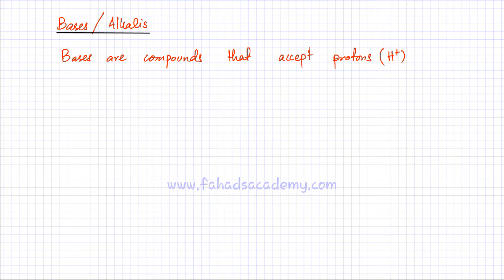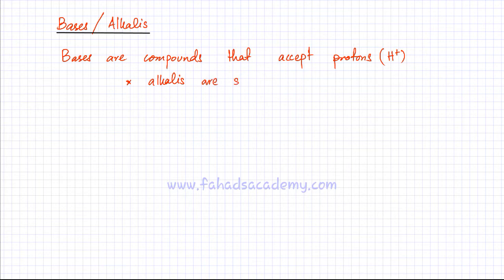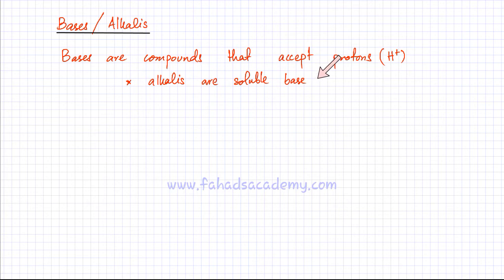Now, what are alkalis? Alkalis are simply soluble bases. Any base that dissolves in water would be called an alkali. Group 1 hydroxides, for example, are very soluble, so they would be called alkalis.